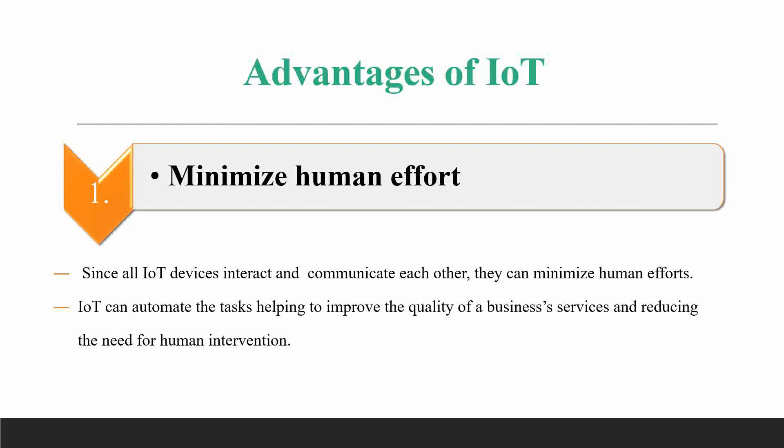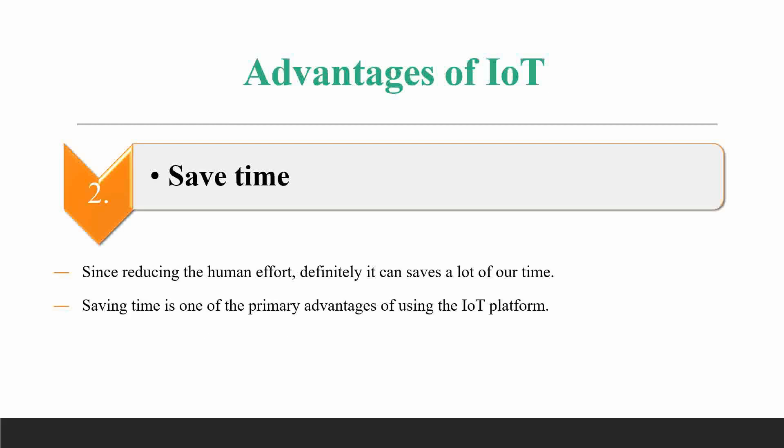Another advantage is saving time. Since IoT reduces human efforts, it can save a lot of time. We can perform every type of task, even complex problems, within a short period of time. Saving time is one of the primary advantages of using IoT platforms since all devices are interconnected.